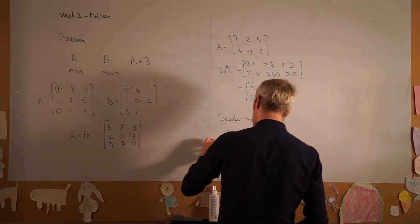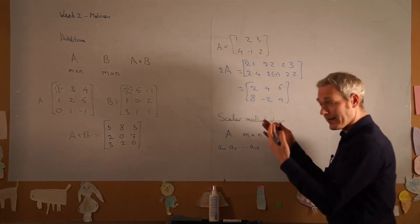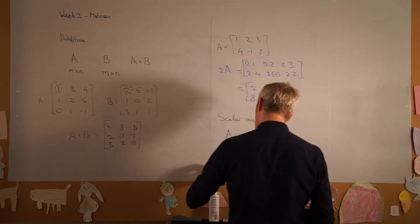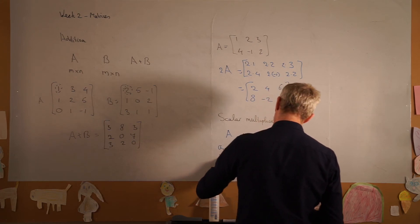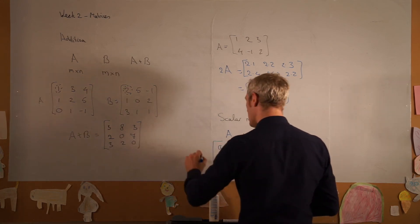which I can write as a_11, a_12, all the way to a_1n, and then we have our rows a_m1, a_m2, all the way to a_mn. So if this is our matrix A with all its elements...